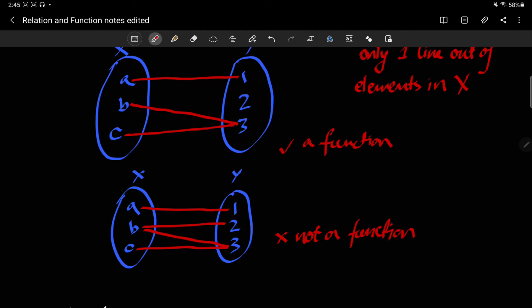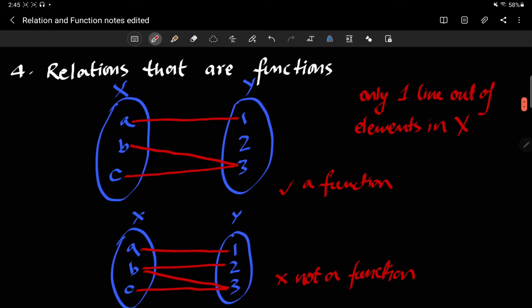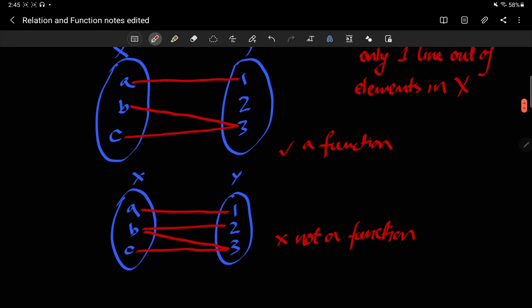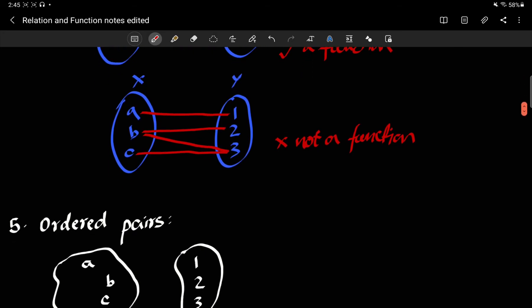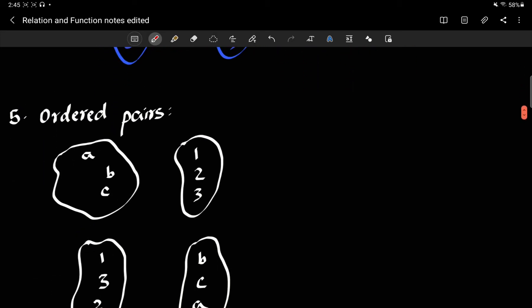Why? It's not a function because we have two arrows coming out of, or two lines coming out of b. So it's essential that for a relation to be a function, there should be only one line coming out of the left set.